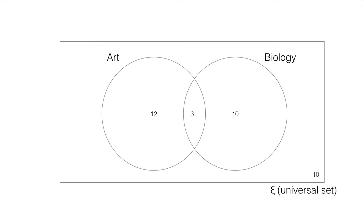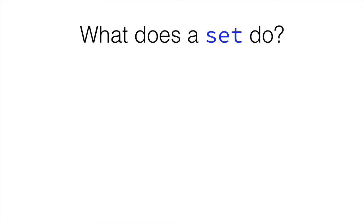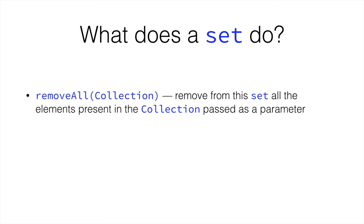This notation for sets is called a Venn diagram. So what things can a set do? You can call removeAll, and this removes from the set that you're calling this method on all the elements present in the other collection, which could be a set, or a list, or something like that.